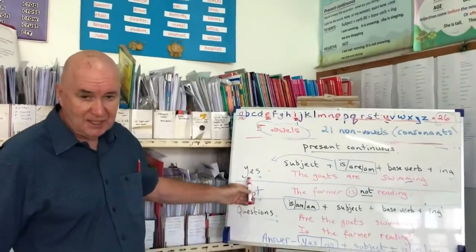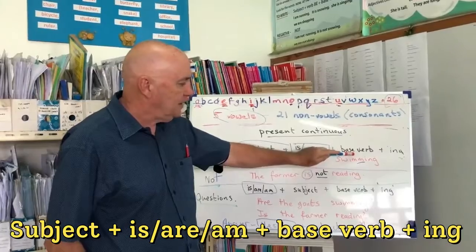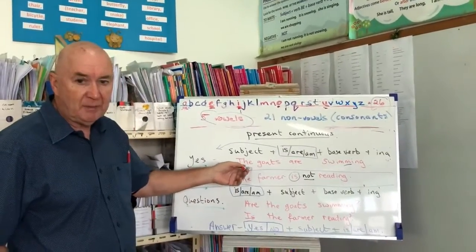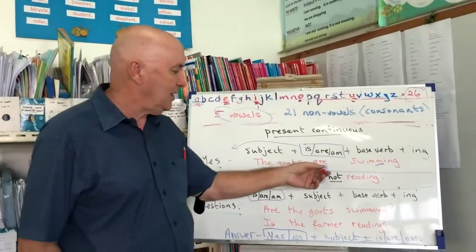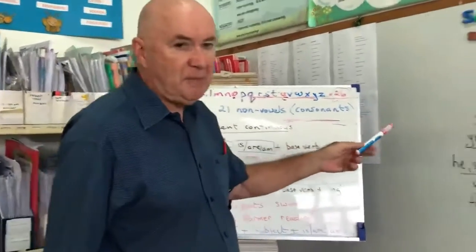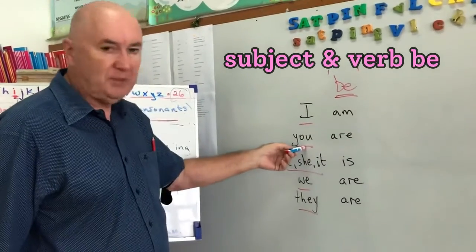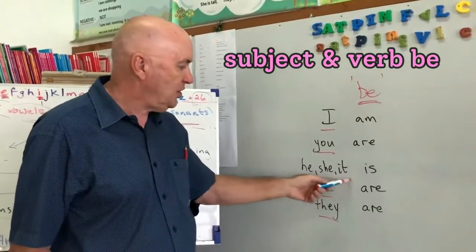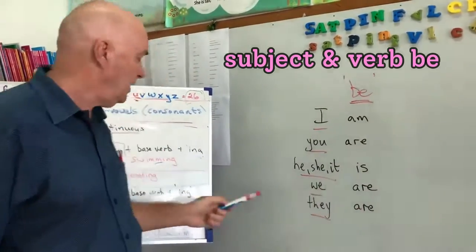If we want to say yes, then we have our subject and then is, are, or am, then our base verb and -ing. So right here: the goats are swimming. Who's the subject? The goats. And because the goats is the same as they, we have to use are. Our base verb is swim and then we put -ing. So remember: if the subject is I, we say am. If the subject is you — whether one or more than one — we use are. He, she, or it — one person or one thing — uses is. And then we and they — more than one — use are. So that's how we say yes.